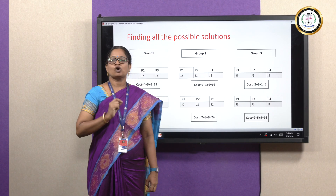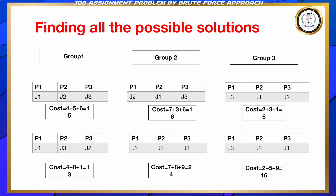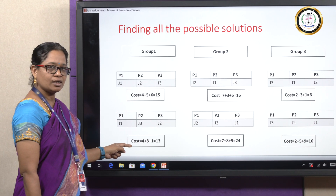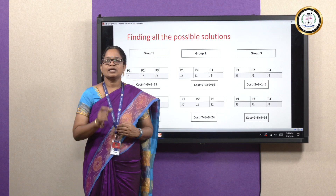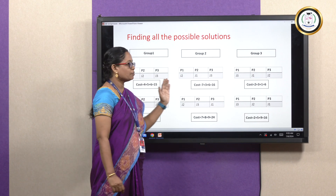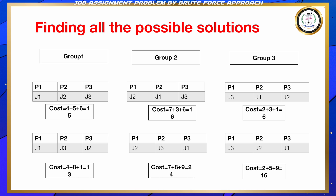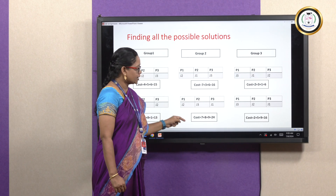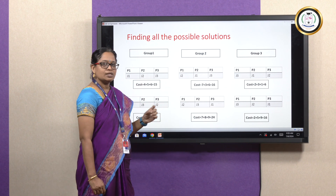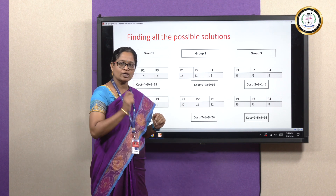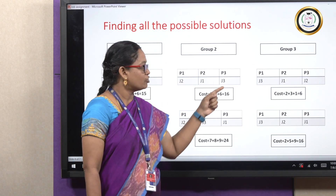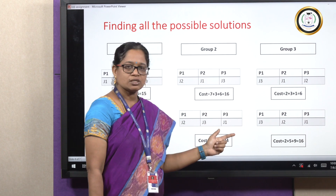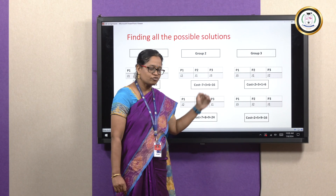The cost associated with every job assignment is given here. In group 1, for the first job assignment the cost is 15, and for the second job assignment the cost is 13. The minimum cost in group 1 is 13. In group 2, the cost for the first job assignment is 16 and for the second is 24. The minimum cost in group 2 is 16. In group 3, the cost for the first job assignment is 6 and for the second is 16. The minimum cost in group 3 is 6.